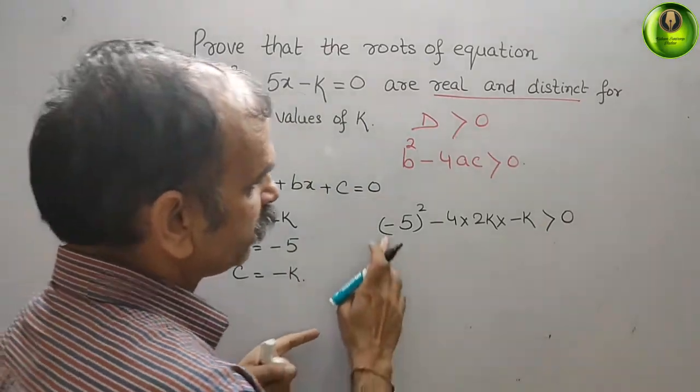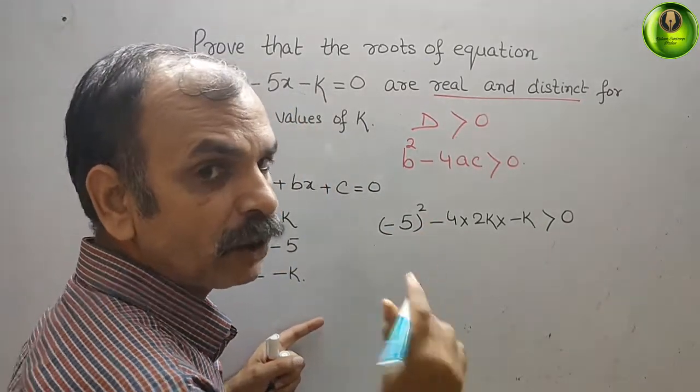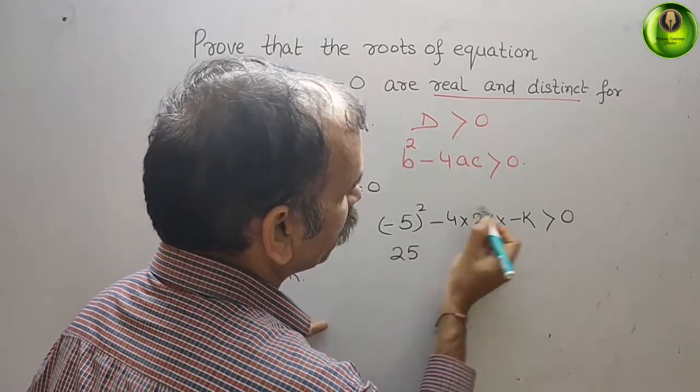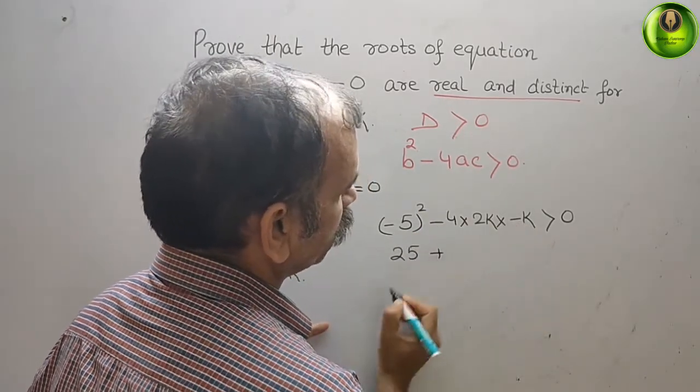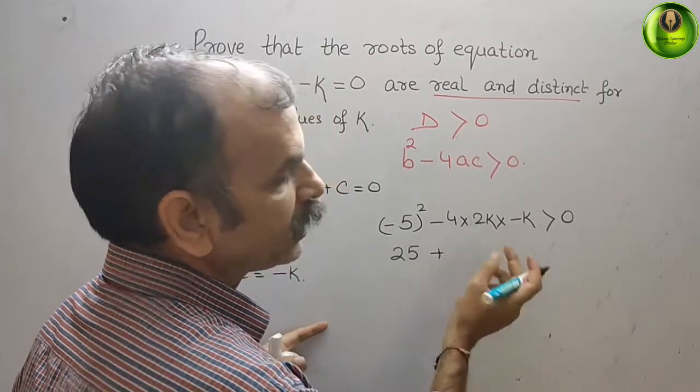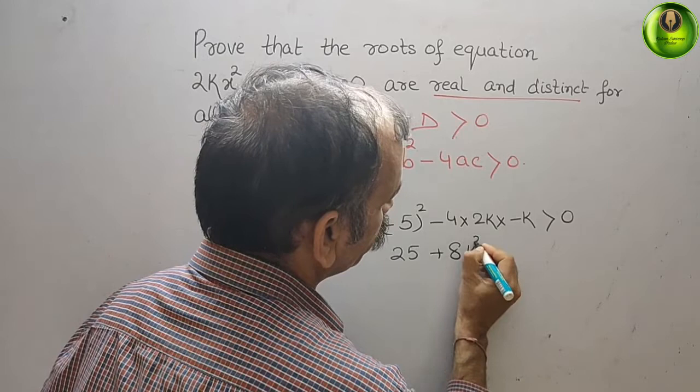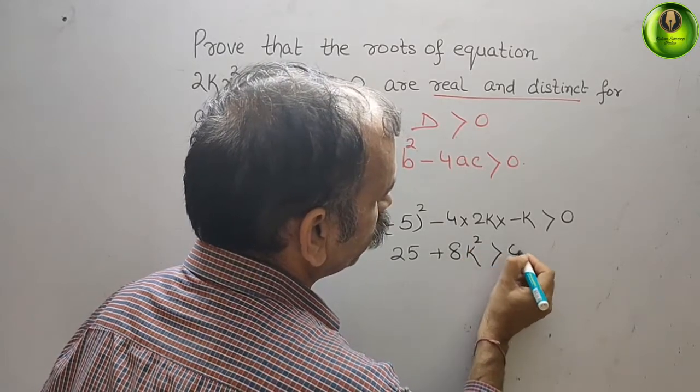Now, if you see, (-5)² is nothing but 25. And here, minus into minus is plus. 4 into 2 is 8. So here, you will get 8k². It's greater than or equal to 0.